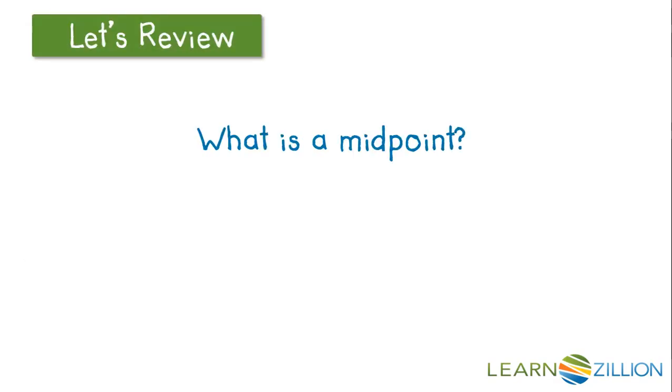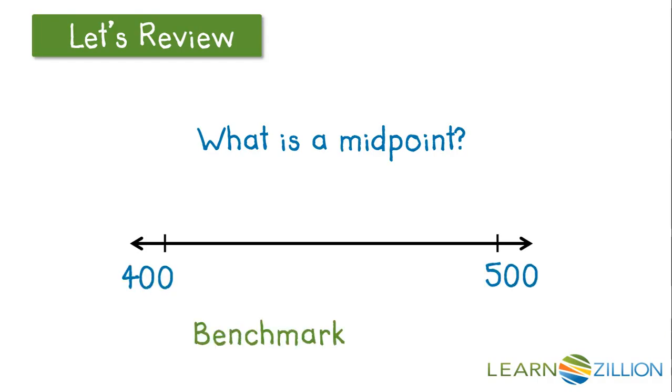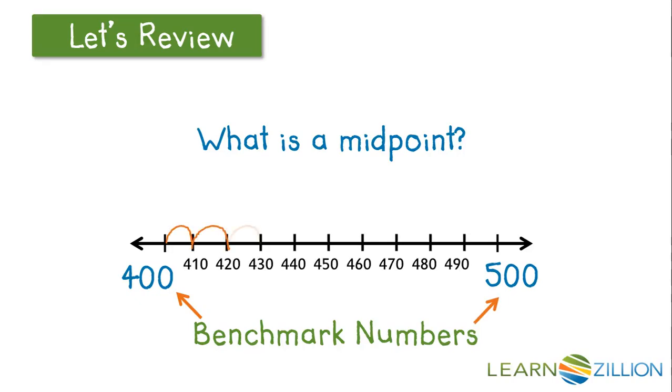Let's also review the definition of a midpoint. On this number line, our benchmark numbers are 400 and 500. Once we add the increments to our number line, we want to find the middle. The middle of our number line is right at 450. The 5 gives us a clue that we're in the middle. This is the midpoint.